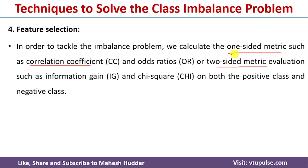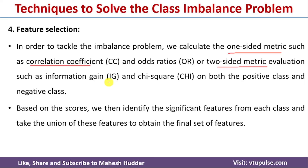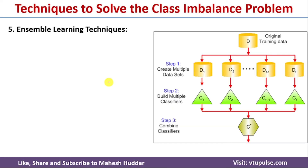We can also use two-sided metrics such as information gain and chi-square. By calculating the importance of each feature using information gain, we retain features that are important for model building and remove those that are not. This process helps reduce class imbalance effects in the given dataset.